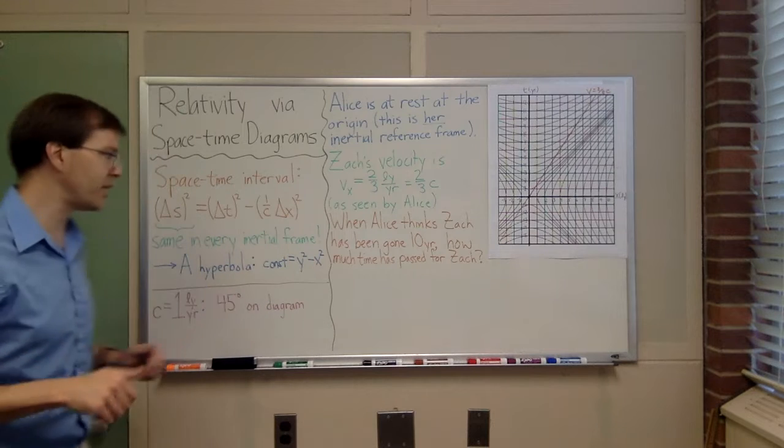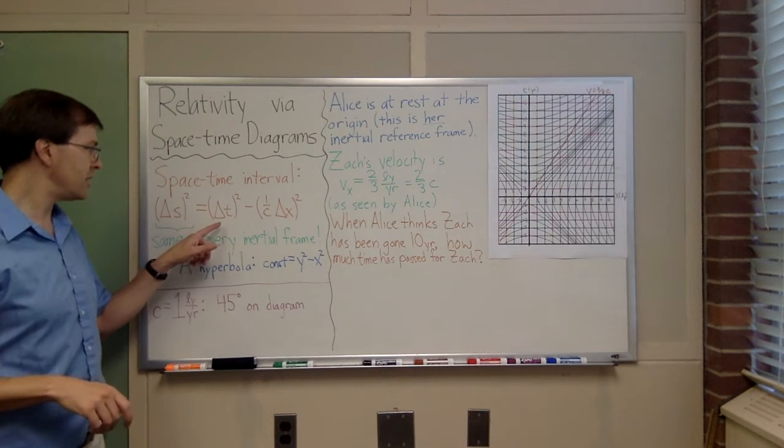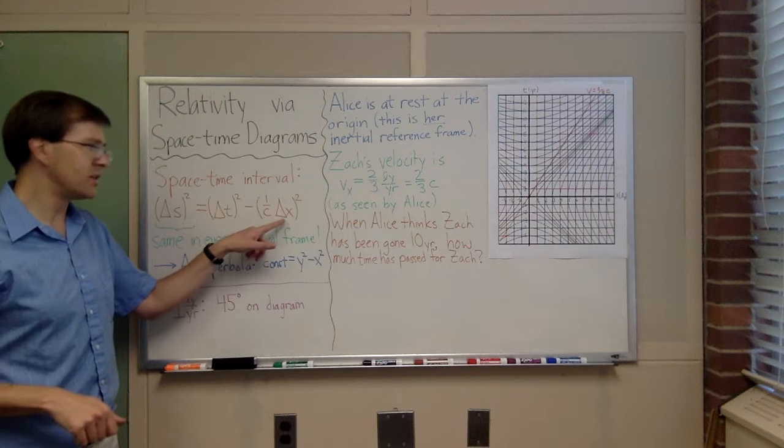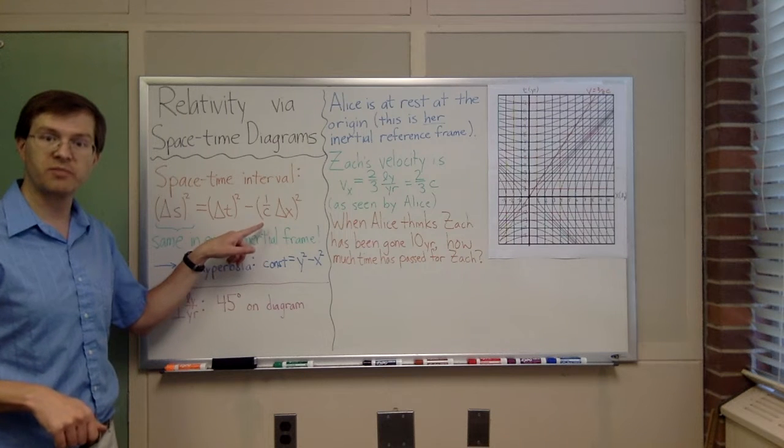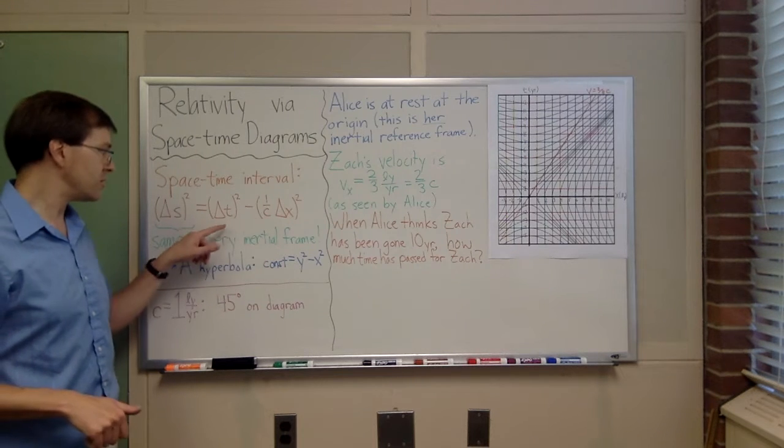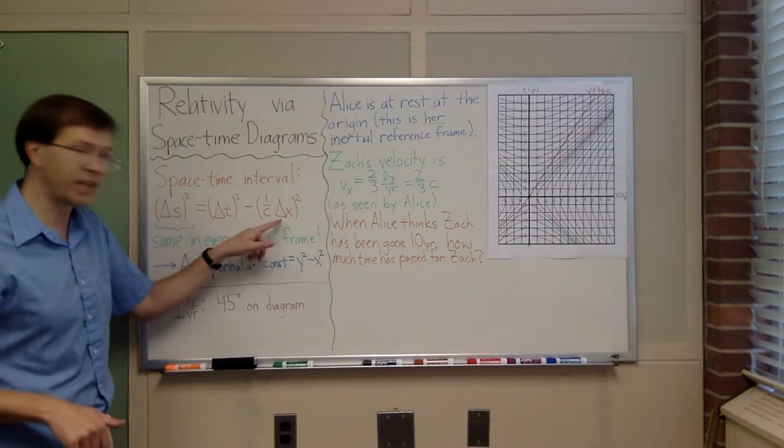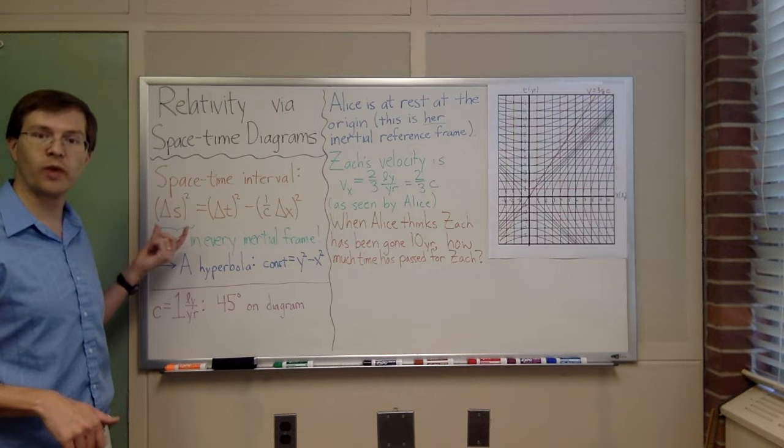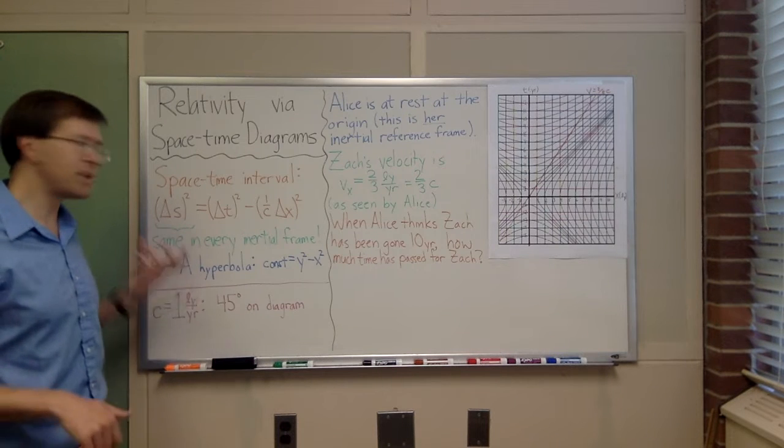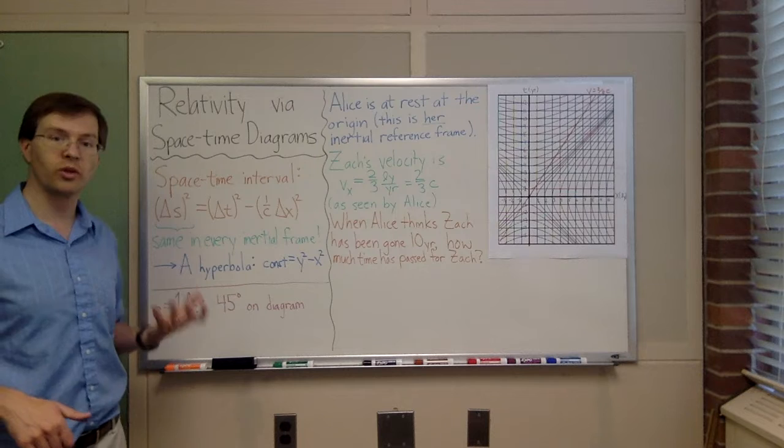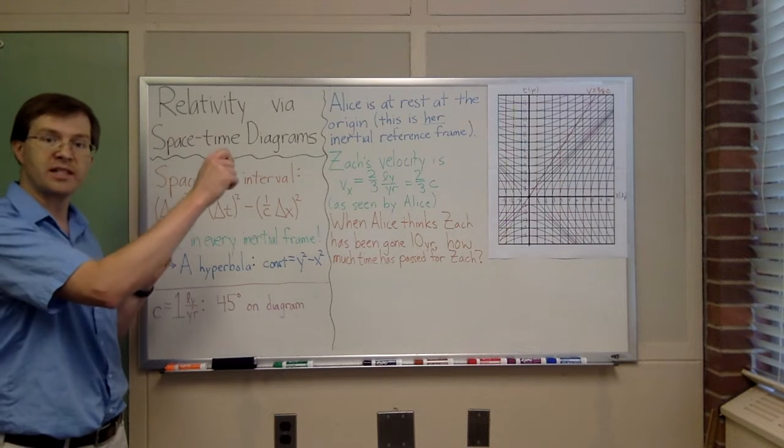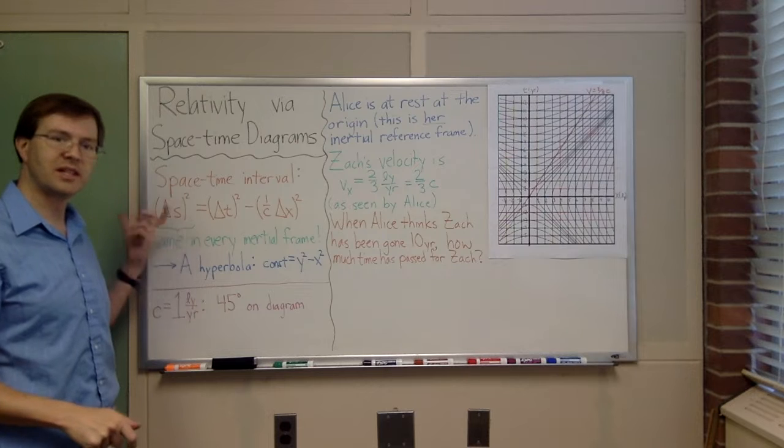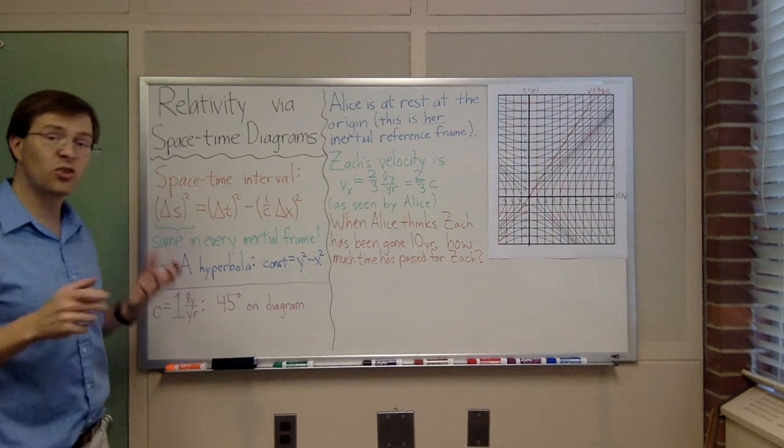But the beautiful thing is that this combination, the time interval squared minus the distance interval squared, with a factor of the speed of light to get the units the same, delta t squared minus 1 over c delta x quantity squared, that difference gives us the spacetime interval squared, delta s squared. And the spacetime interval is something that every observer will agree on.